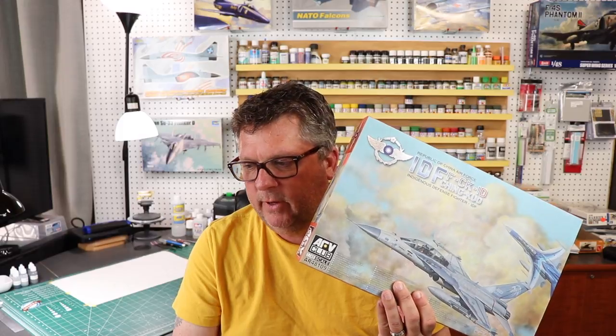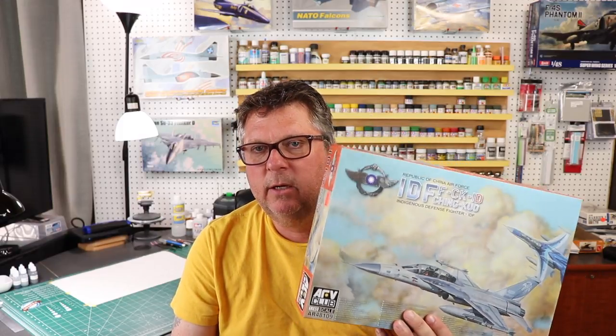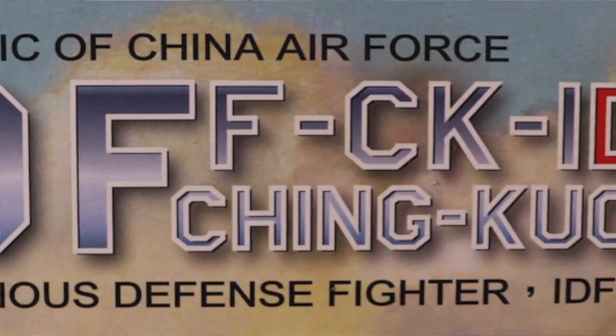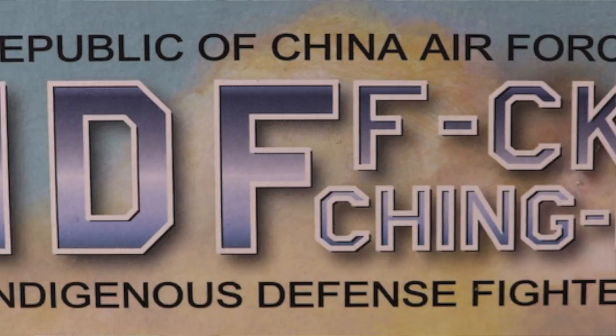So I was mulling that over and while at the Virginia shootout up in Roanoke, Virginia, I came across a kit that really looked interesting to me - the Indigenous Defense Fighter for the Republic of China Air Force by AFV Club. Really looks like an interesting kit. So I called an audible and said that I was going to do that one as the first video build. Before we even get started, I want to throw out there - yes, it's the IDF F-CK-1D and that's going to get some jokes, I'm sure. It does look funny. I don't know what they were thinking when they did that, but it is what it is.